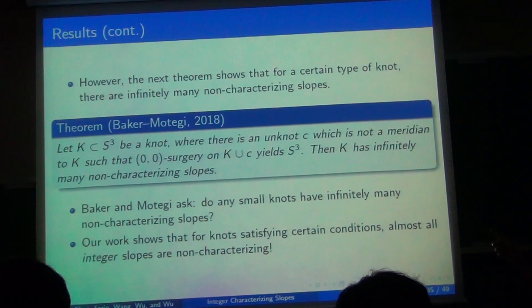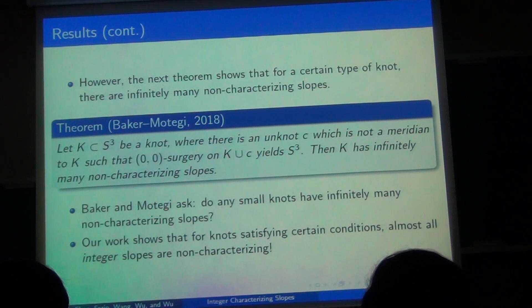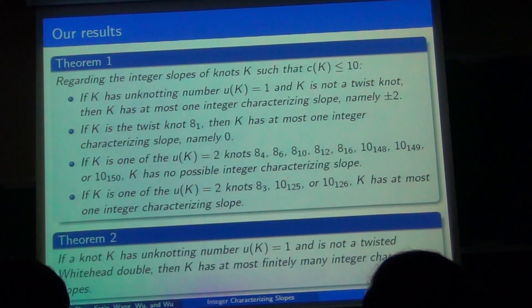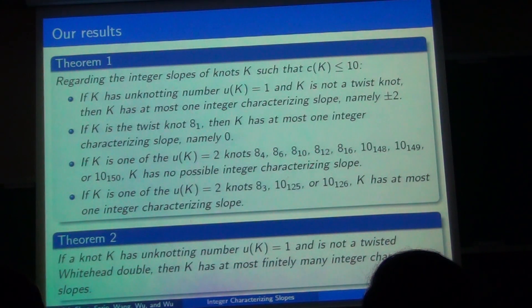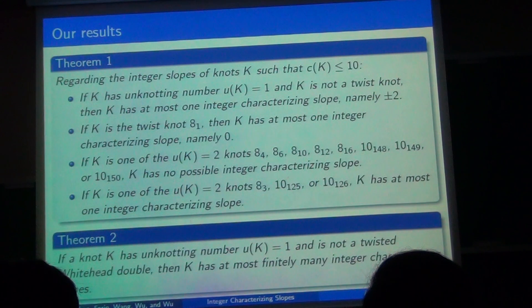So on the other hand, there's another theorem, which is the Baker-Motegi result, that says that for K satisfying this condition, there are infinitely many non-characterizing slopes. So they actually asked whether small knots have infinitely many non-characterizing slopes. And we found something related. And our work actually shows that for knots with certain conditions, almost all integer slopes are non-characterizing.